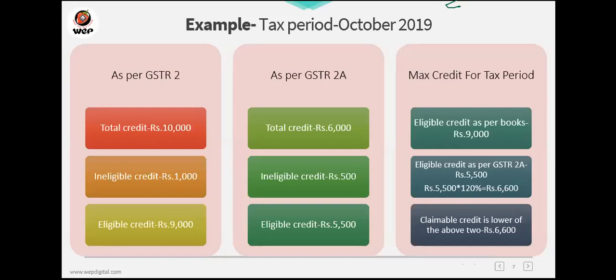Question: if I have 20,000 in GSTR 2 (books) and 30,000 in GSTR 2A, how much am I eligible to claim? You calculate 120% on your GSTR 2A value of 30,000, then compare with your books value. Whichever is lower, you are eligible for that amount.